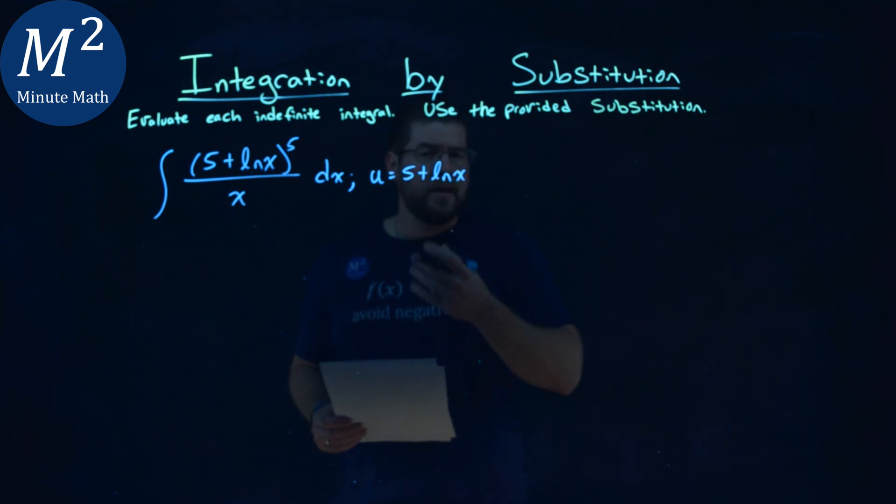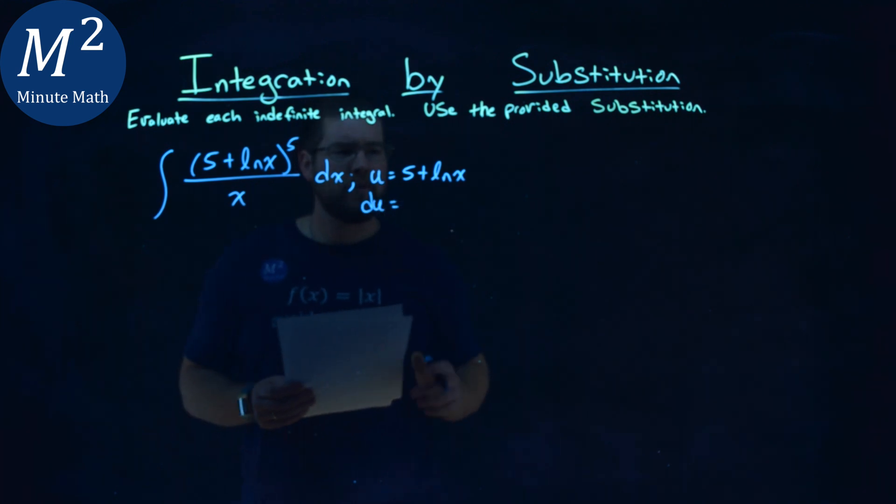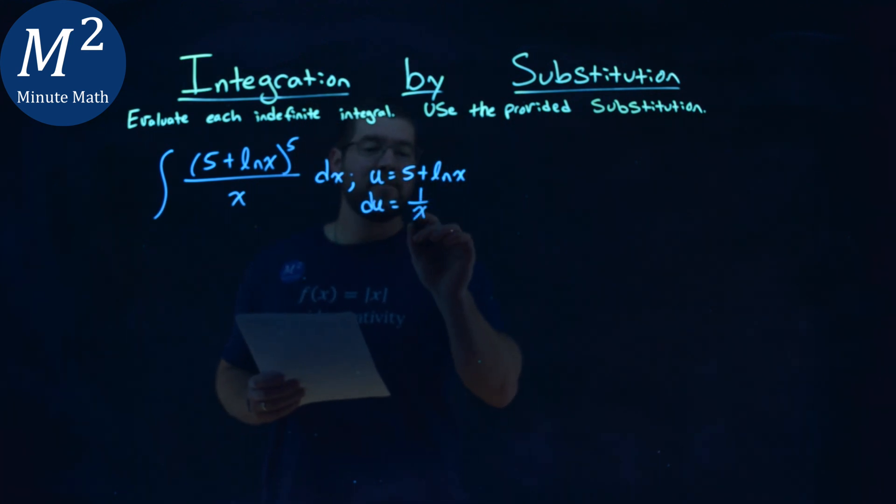Since we're given a u value, I want to find my du value, the derivative. So the derivative of 5 + ln(x) is just 1/x, the derivative of ln(x), 1/x dx. Don't have to worry about the 5 there.